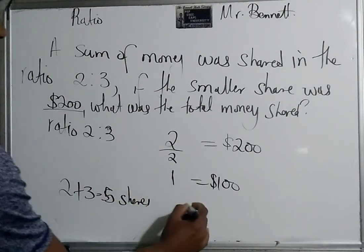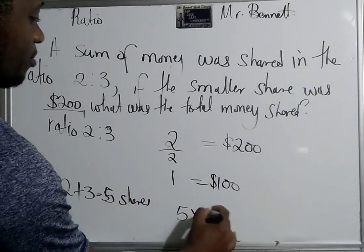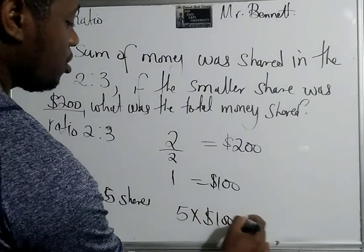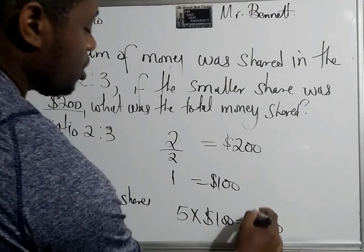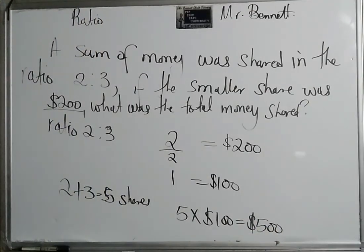So it's safe to say, we can say five times one hundred is equal to five hundred dollars. So this was the total sum of money shared. They got five hundred dollars to share and they shared it in the ratio 2 to 3.